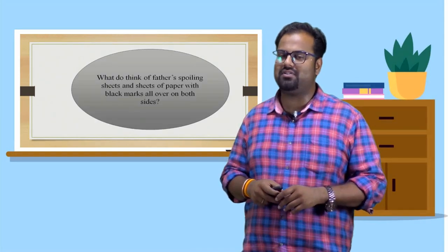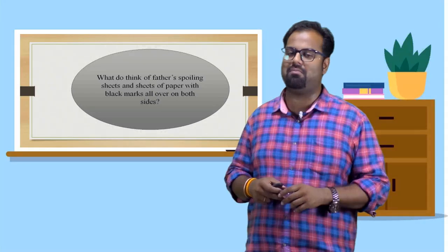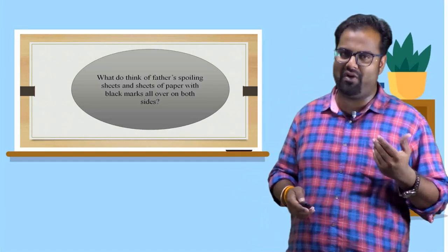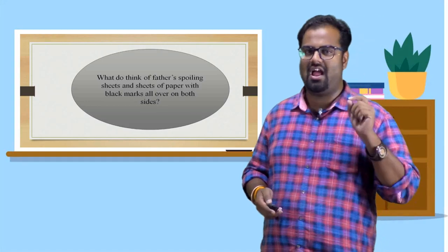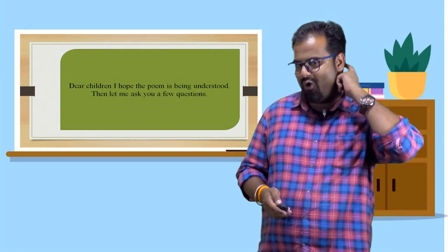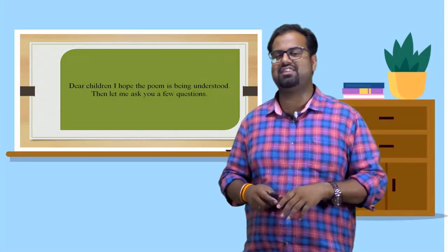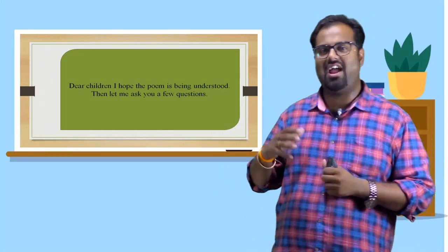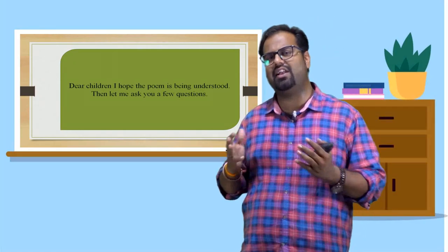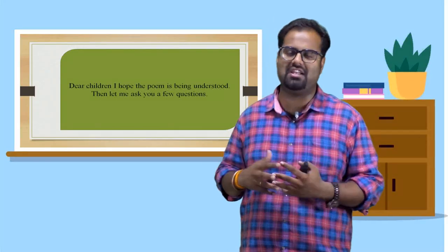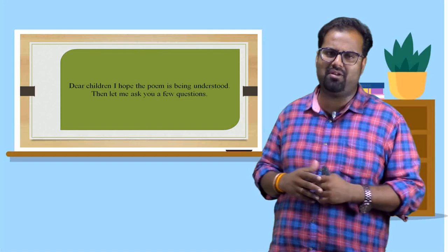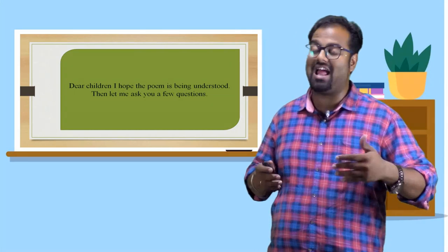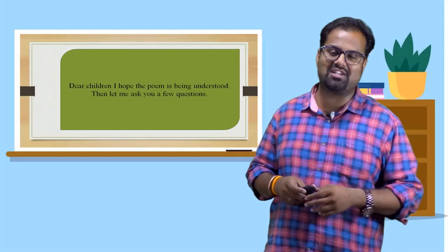Let's see, what do you think of father's spoiling sheets and sheets of paper with black marks all over on both slides? The child is telling the same. You are least bothered when you waste the sheets. But you are very, very concerned when I take a single sheet and that I use for making the boat. Dear children, I hope the poem is being understood. Then let me ask you some questions. The entire poem is very simple. A child asks a lot of questions to his mother. And the child asks, as father is writing and writing, what is the joy he is getting writing and writing? And how beautiful stories you tell me, but father cannot tell me the beautiful stories. And also he says that whether dad's mom never told him any stories or has he forgotten them all? What is the beauty of writing and writing? This kind of questions he keeps asking.